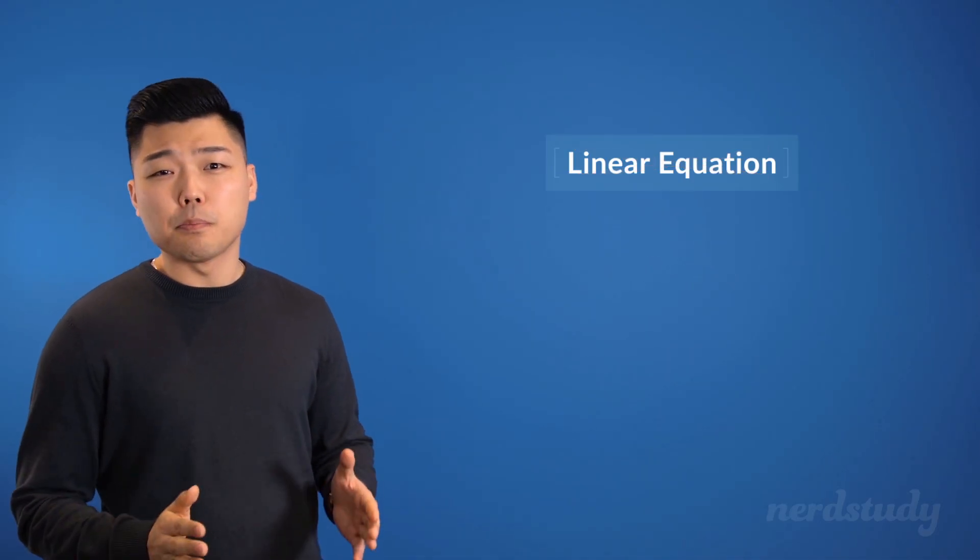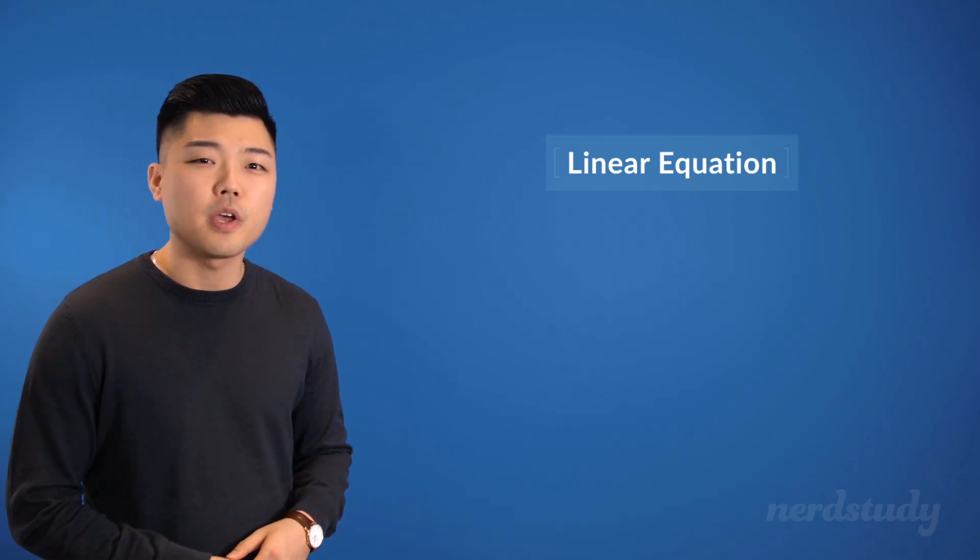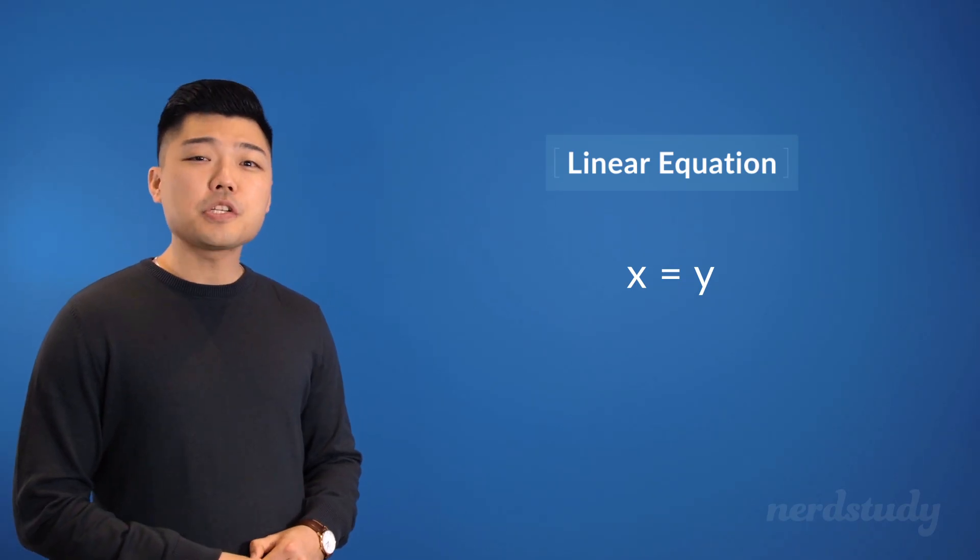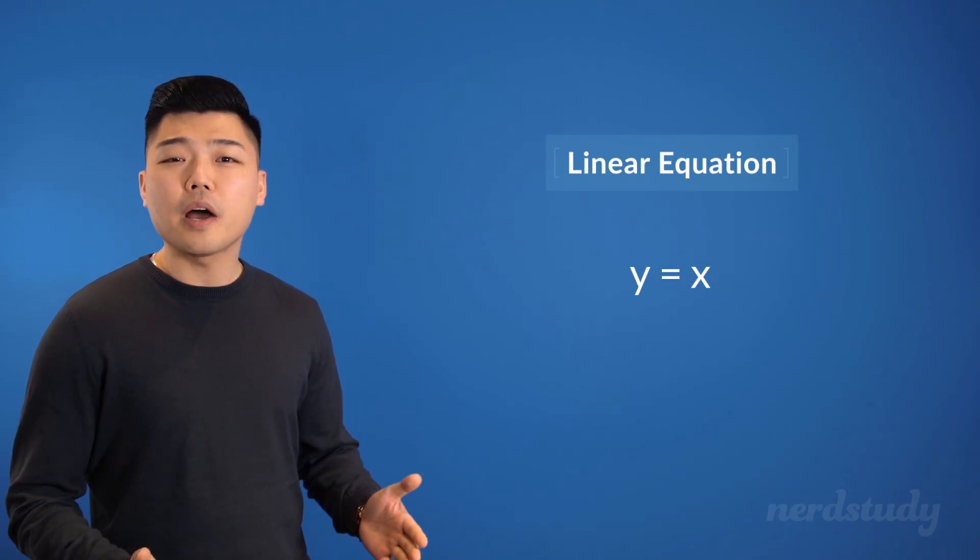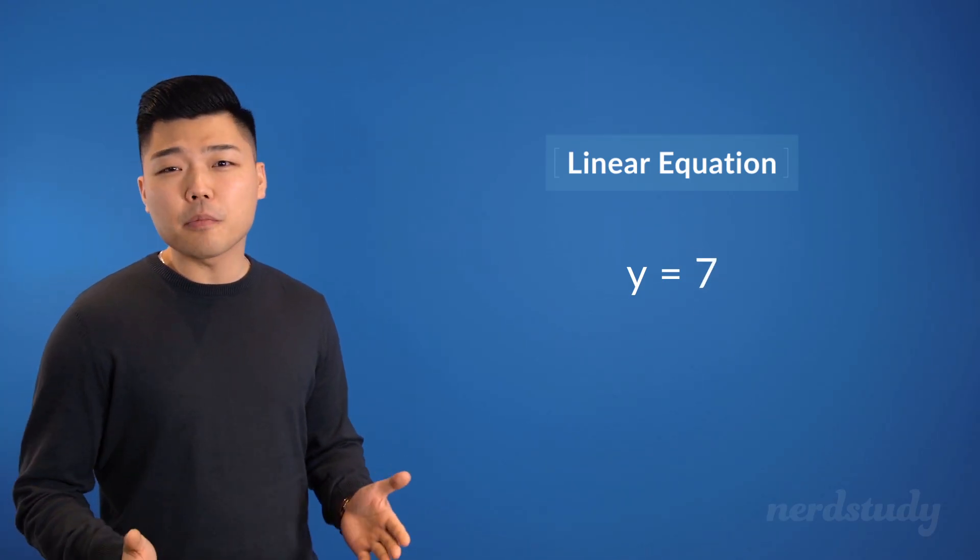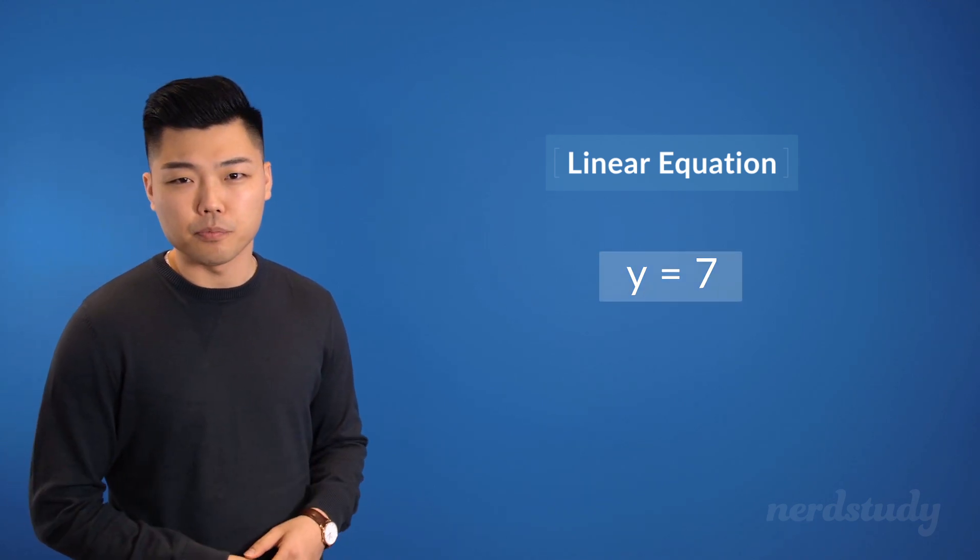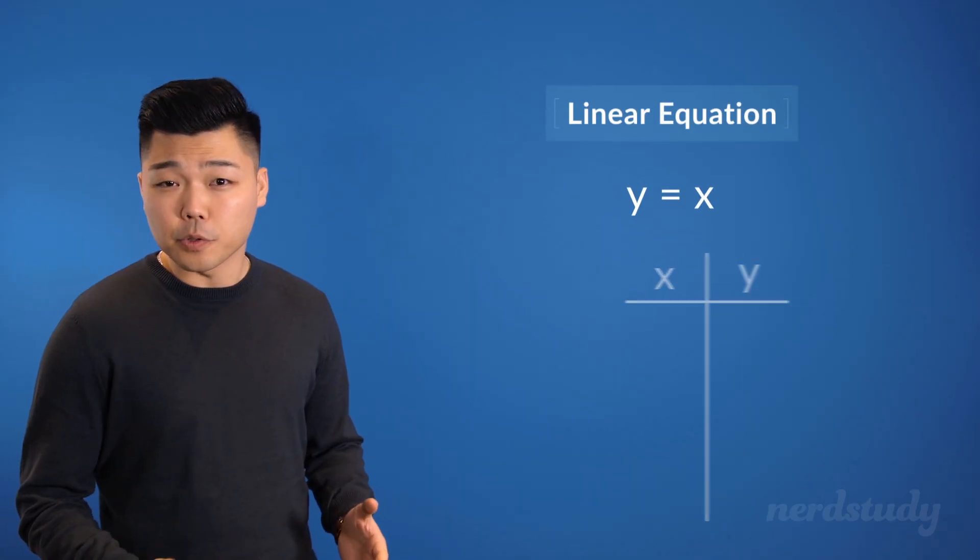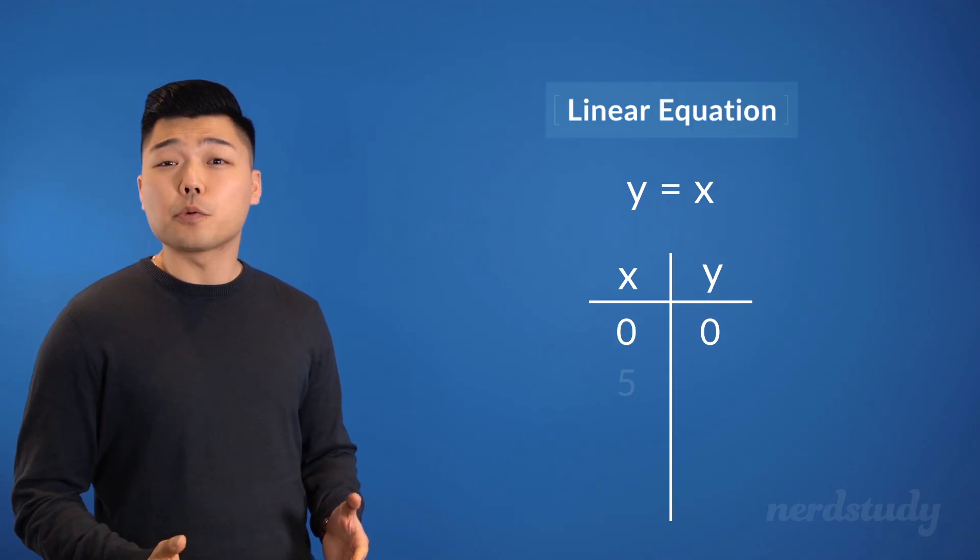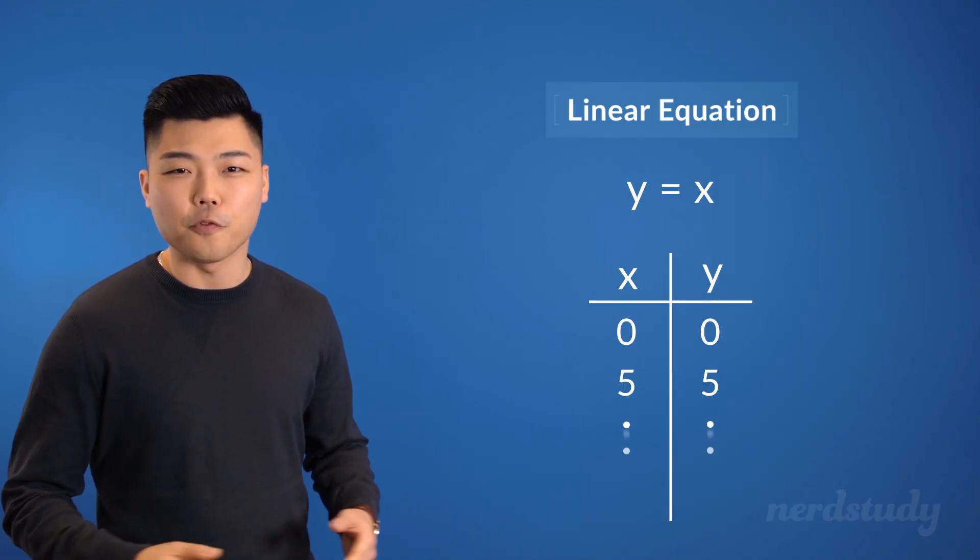A linear equation in its most basic form is a perfect 1 to 1 relationship, where if x is a number, y is the same number. The equation for this would be y equals x. As we can see, if we plug in any number for x, y would simply take on that exact same value. So if x is equal to 0, then y is also equal to 0. And if x is equal to 5, then y is also equal to 5.